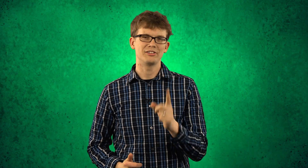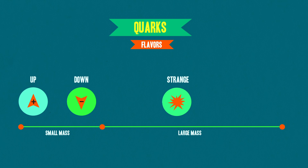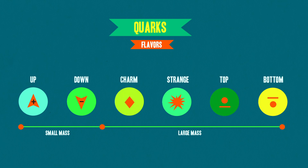And there are six flavors of quarks: up, down, strange, charm, top, and bottom. Up quarks have a slight positive charge, while down quarks have a slight negative charge, and they both have the smallest masses of all the quarks. The other quarks have charges too, but they're all much heavier and much rarer, because they quickly decay into up and down quarks.